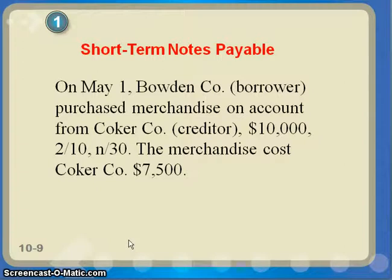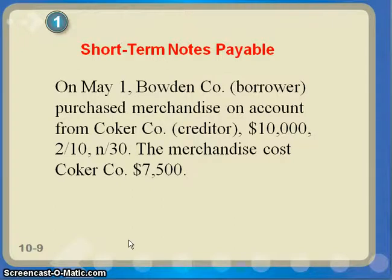What we're going to go through now is an example of how similar the journal entries are in a notes payable from the borrower to the creditor — the people who you owe the money to and the people who are expecting to get the money. The journal entries are basically mirrors of one another, so if you have the journal entries for one side, you pretty much have the journal entries for the other side as well. There are some small differences, but if you have one side, the other side will help you get to the reverse entries.